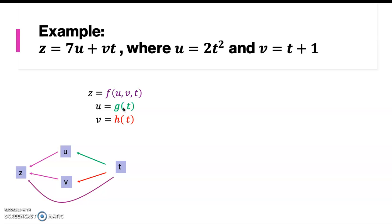We can also write z as a composite function as follows. From this composite function, we know that we want to find the derivative of z, the total derivative of z, that is dz/dt.